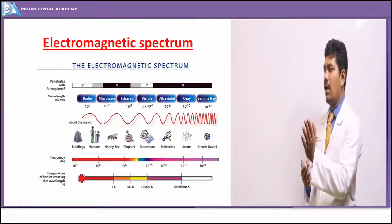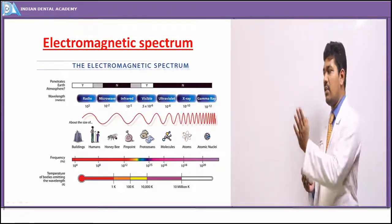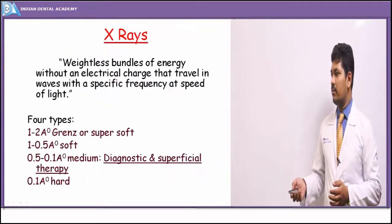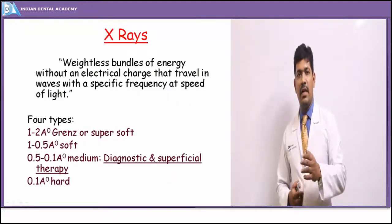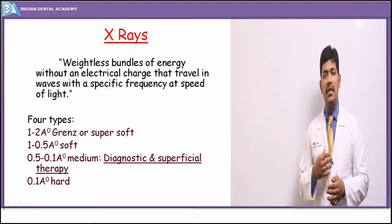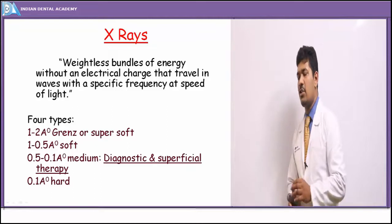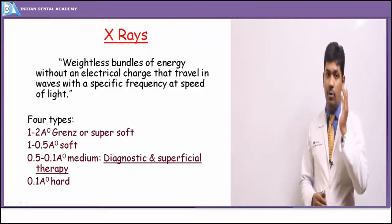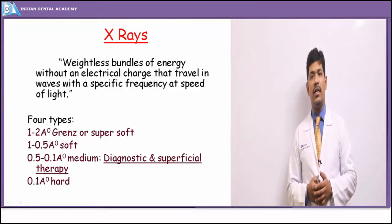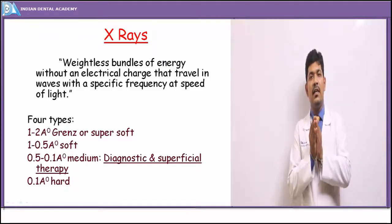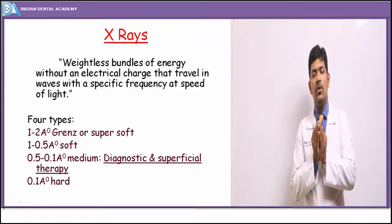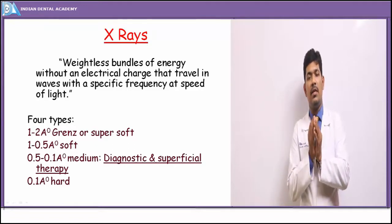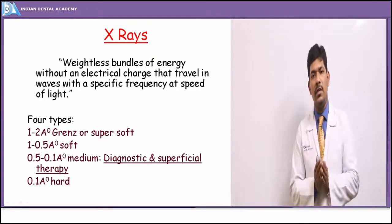From left to right in the spectrum, wavelength gradually decreases, frequency gradually increases, and energy also increases. X-rays are weightless bundles of energy — packets of energy with no electrical charge — traveling through space at the speed of light. According to quantum theory, these are photons propagating through space or matter.